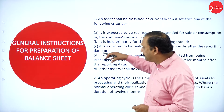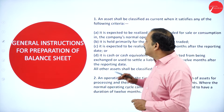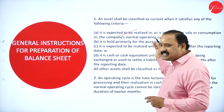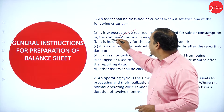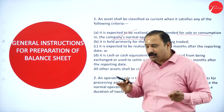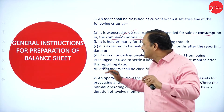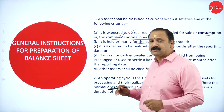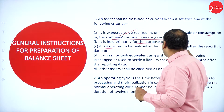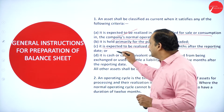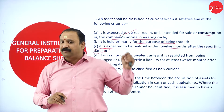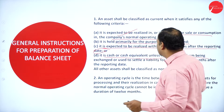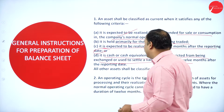For the general instructions for preparation of the balance sheet: an asset shall be classified as current when it is expected to be realized or intended for sale or consumption in the company's normal operating cycle; it is held primarily for the purpose of being traded; it is expected to be realized within 12 months after the reporting date; or it is cash or cash equivalent unless restricted from exchange or used to settle a liability within 12 months.